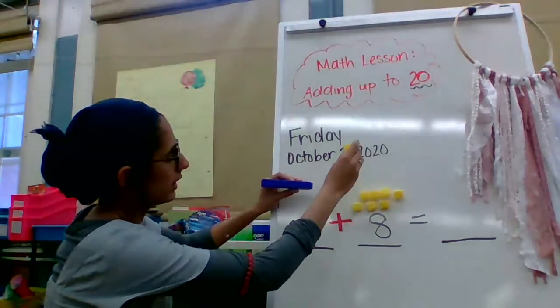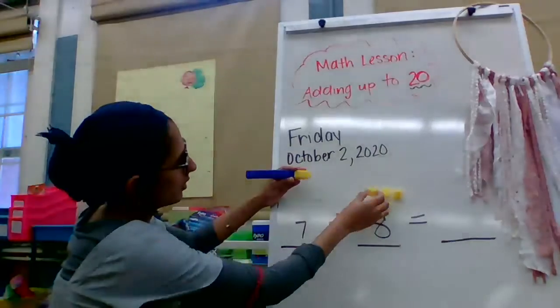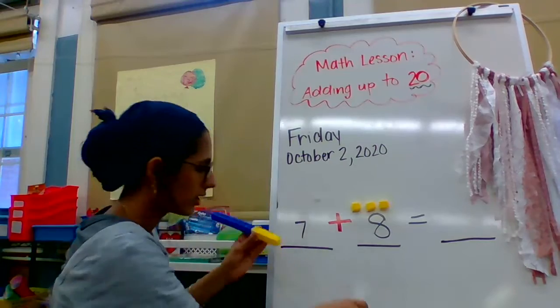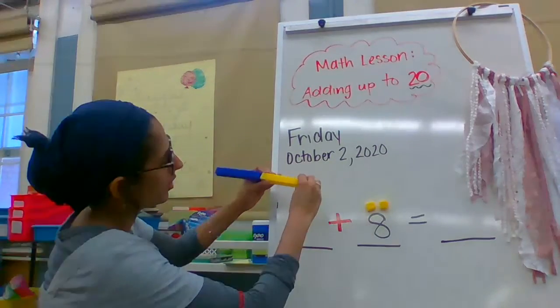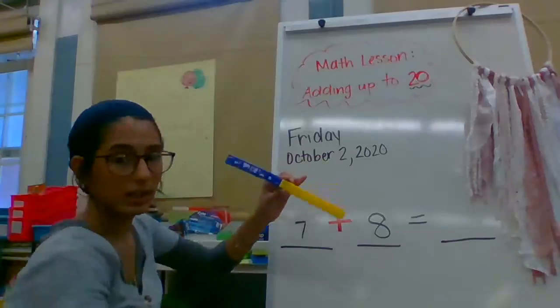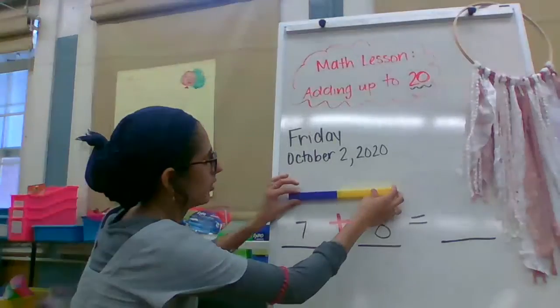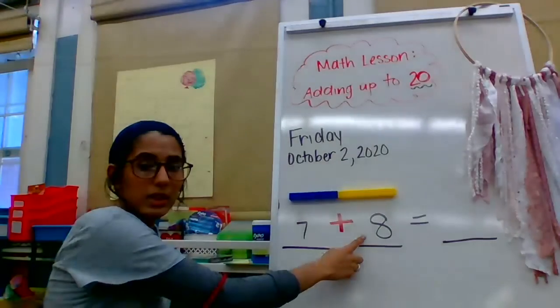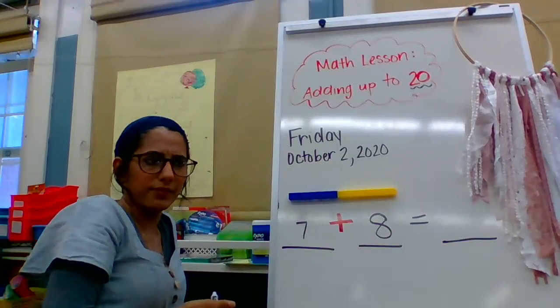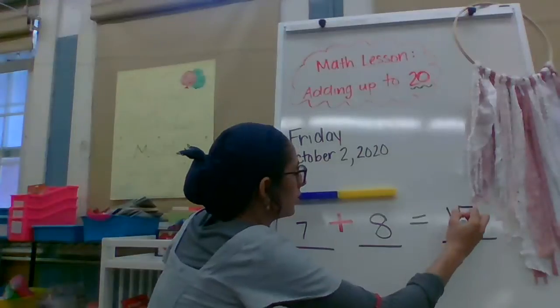And now we count on, right? We're going to put it together. Eight, nine, 10, 11. I lost a cube over there, so I'm just going to take one from here. 12, 13, 14, 15. Oh my goodness, look how long this is. So seven plus eight is equal to, or the same as, 15. Now how do I write the number 15 again? How do I write it? A one and a what? Five. Good job.